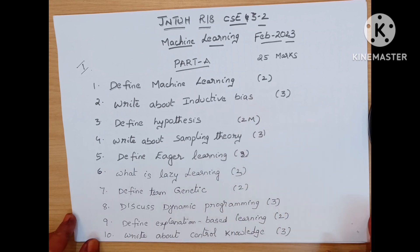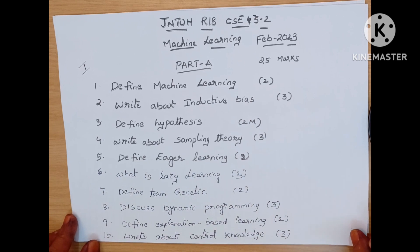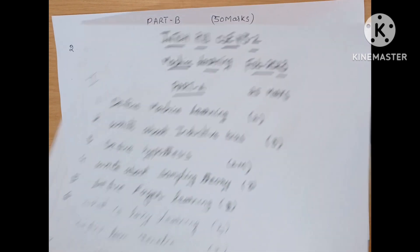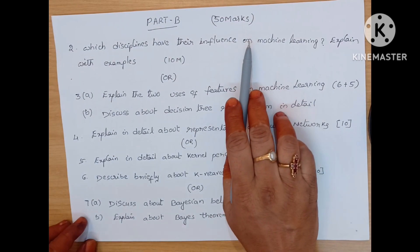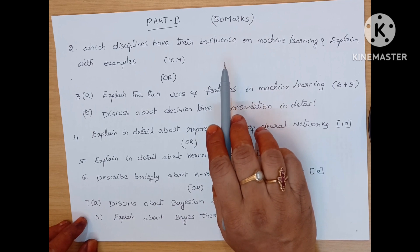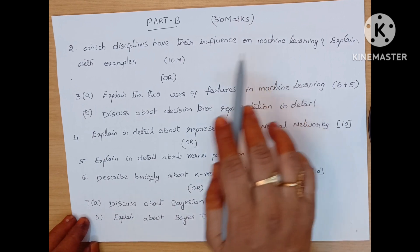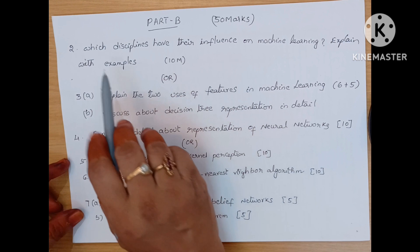All these questions are from all 5 units, totaling 25 marks — that is Part A. Next, Part B is a 50 marks section. There are 5 units, each unit carries 10 marks, so 5 into 10 equals 50 marks.